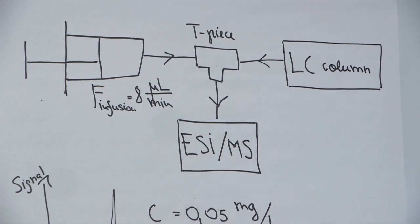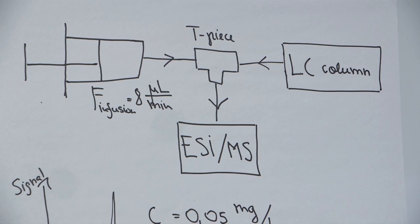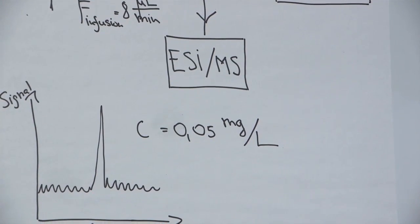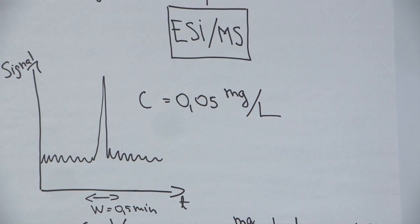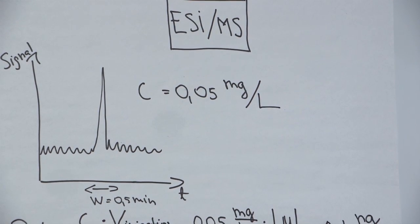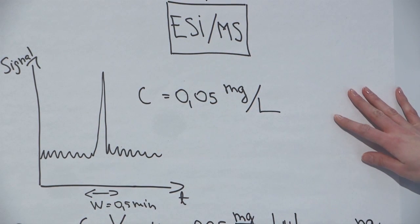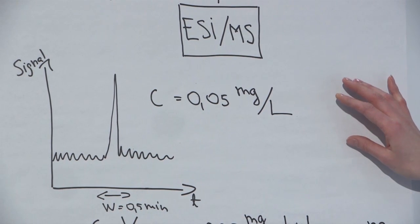Before we can start with our experiments we need to consider what concentration we need for the infusion. In general we do not want this concentration to be too high, because high concentrations may not be influenced by matrix components in the same way as low concentrations. Therefore in our diabendazole analysis in tomato we'll try to keep it close to a medium concentration level. We know from our injections that the middle of our working range is about 0.05 milligrams of diabendazole per one liter of extract, and from this we can calculate how concentrated our infusion solution needs to be.